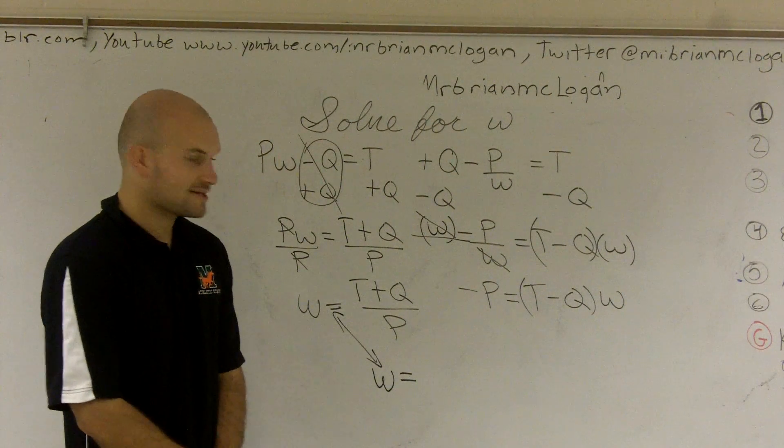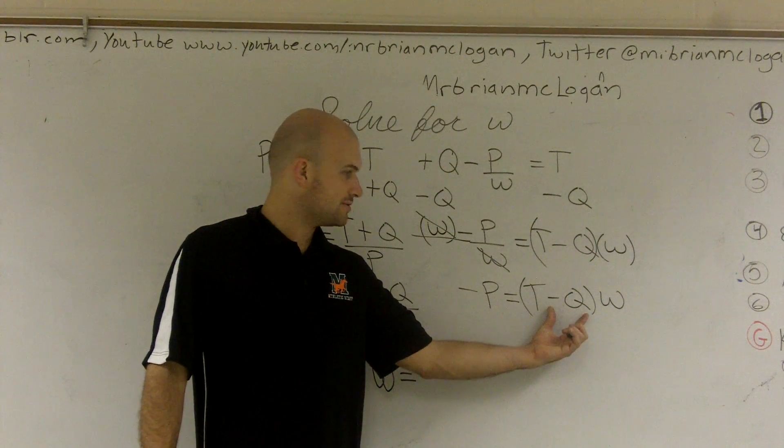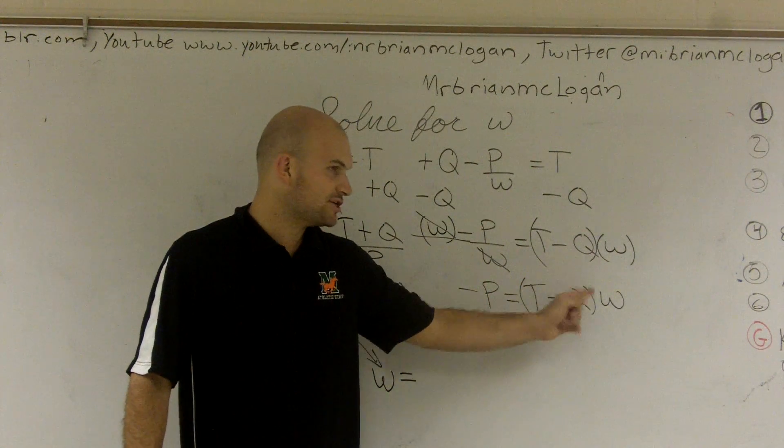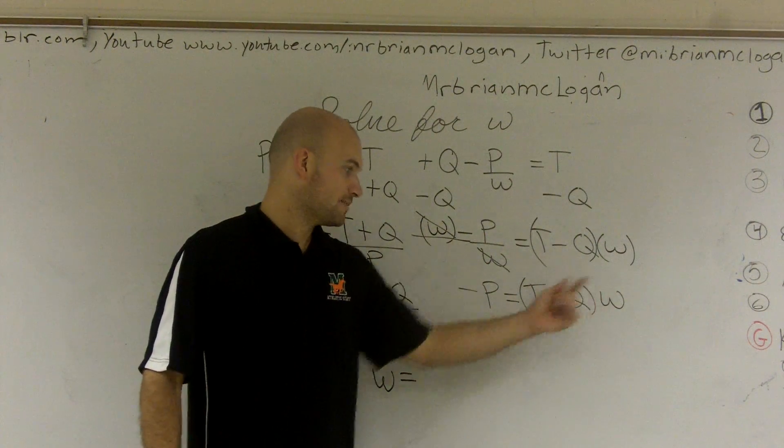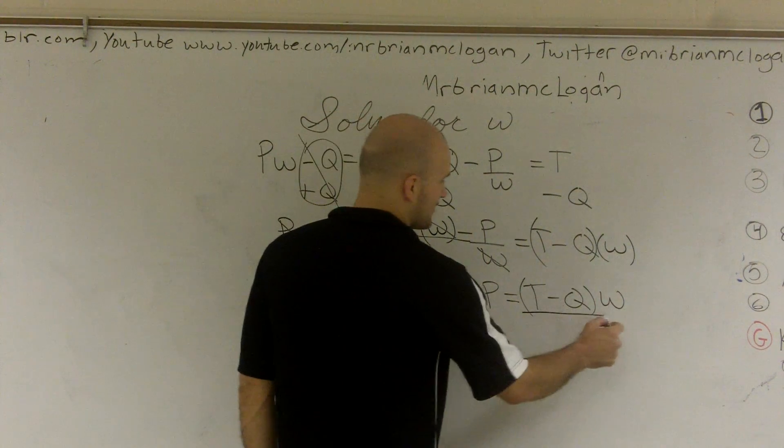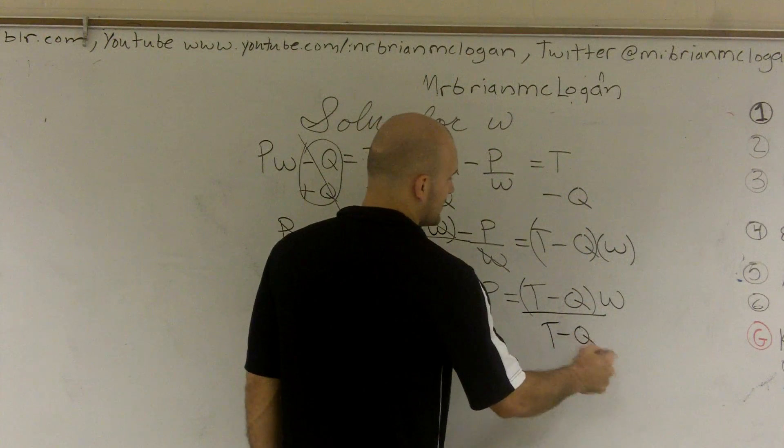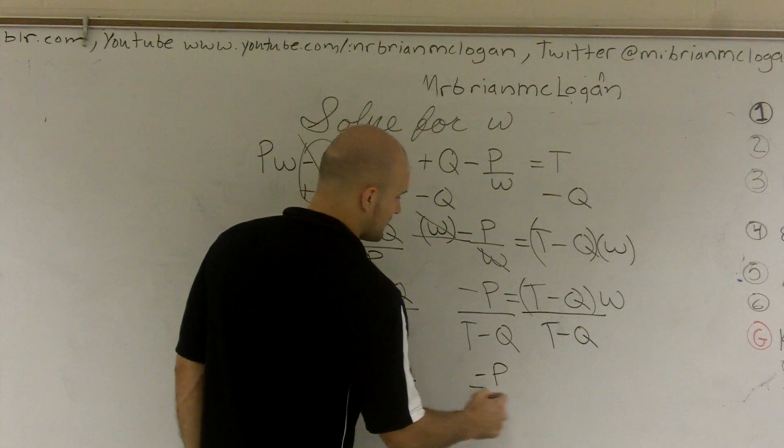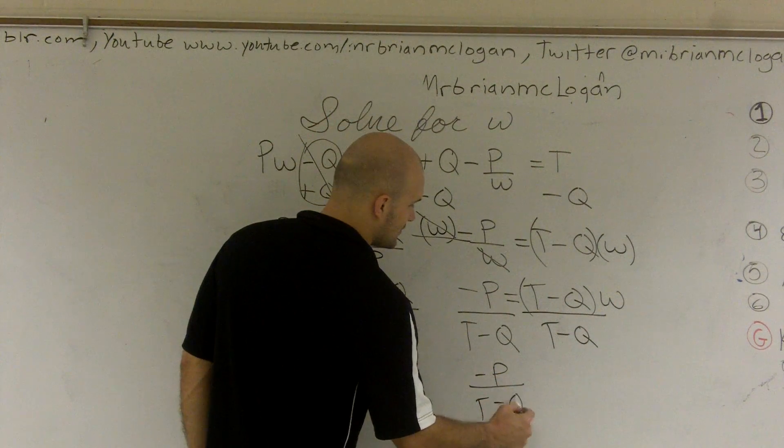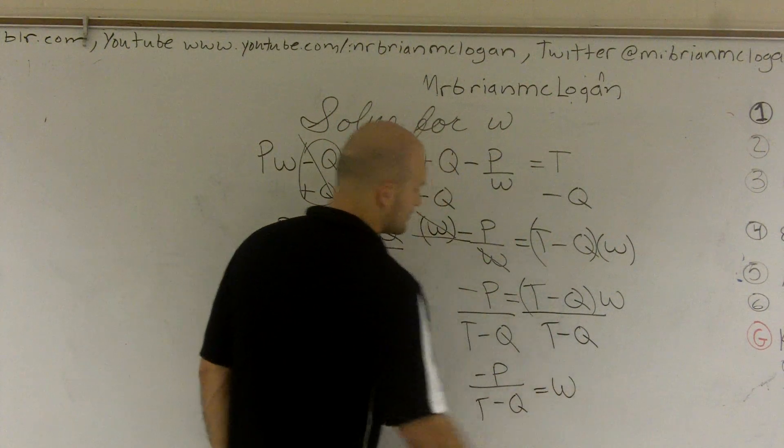So then I look at this problem and I say, well, what is actually multiplying by my w? Well, I'm multiplying a t minus q times the w. So it's both of these numbers are being multiplied by w. So to get rid of them, I'm going to have to divide by t minus q.